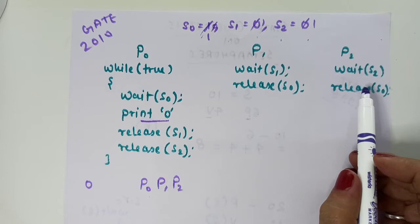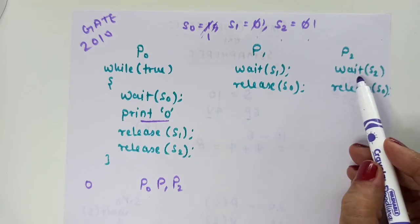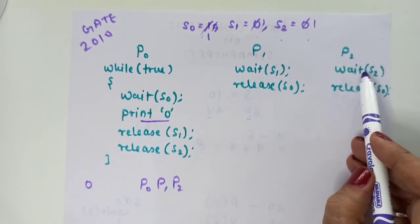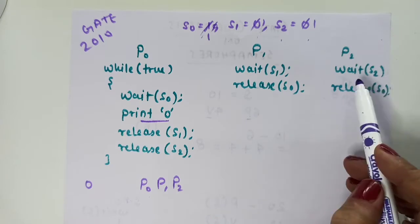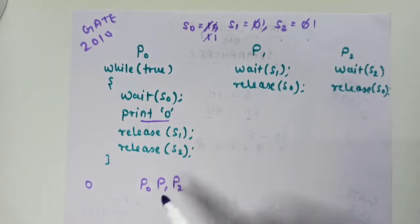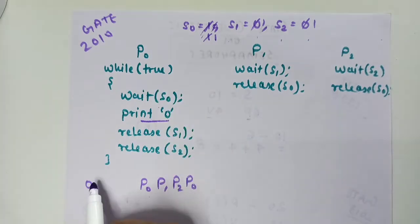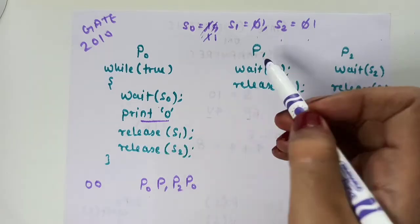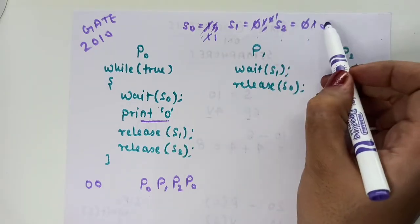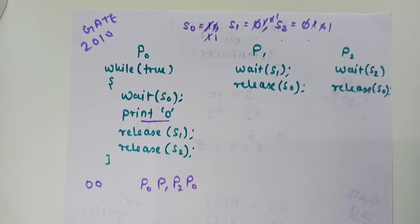P2 has while(true), so it will try to execute. P2 performs wait on S2, which now executes. Then it releases S0, incrementing it to 1 again. Now if P0 gets a chance, the wait operation can be performed, and it will print 0 one more time, then release S1 and S2, making them 1.